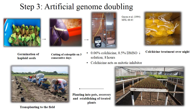Third step: artificial genome doubling. First, germination of haploid plants, then cutting the coleoptile on three consecutive days. A small cut is given to enhance the growth and intake of colchicine. 0.06% colchicine and 0.5% DMSO solution is given for eight hours. Colchicine acts as a mitotic inhibitor.